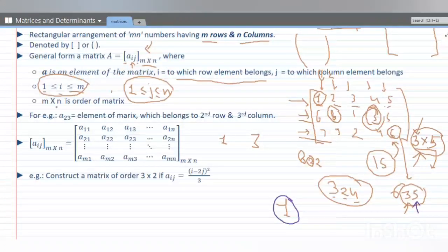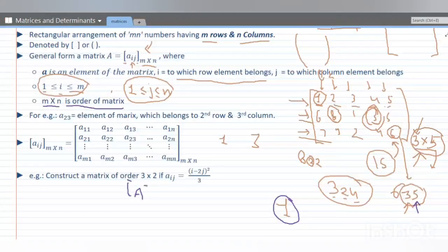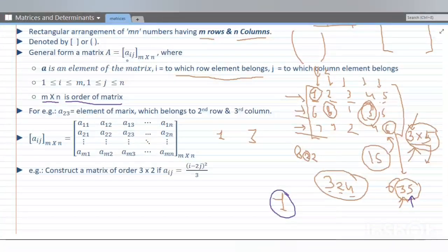M cross N is called the order of the matrix. If a matrix A has order 5 cross 5, then it has 5 number of rows, 5 numbers of columns, and total number of elements = 25. The general form shows all elements. Before understanding this further, let us solve an example for better understanding of how elements are written.